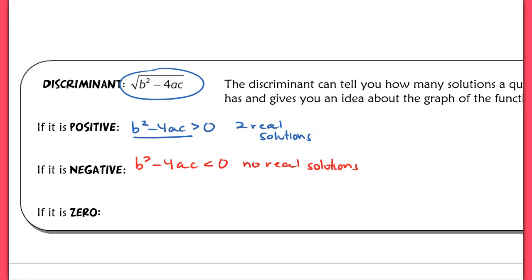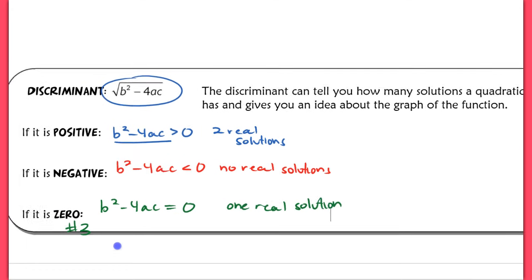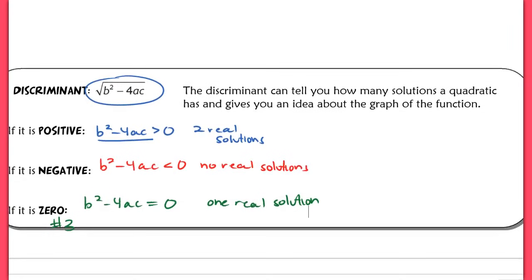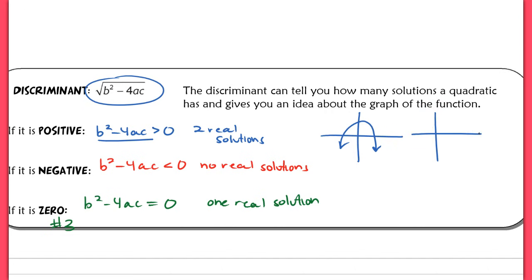If the discriminant is exactly zero — if b squared minus 4ac equals zero — you only have one real solution. This is important because it's going to tie into what we do graphically. When your discriminant is positive and you have two real solutions, this is going to be a parabola that touches the x-axis at two different unique spots.